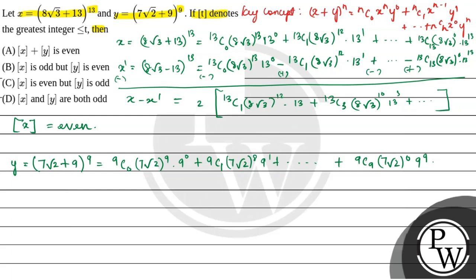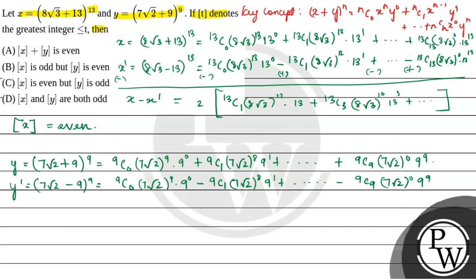Now consider y' = (7√2 - 9)^9. Expanding this gives: C(9,0)·(7√2)^9·9^0 - C(9,1)·(7√2)^8·9^1 + ... - C(9,9)·(7√2)^0·9^9, with alternating signs.